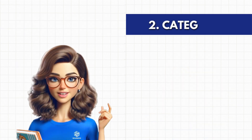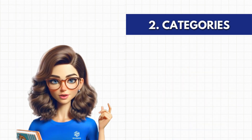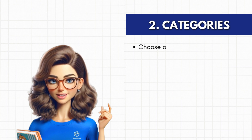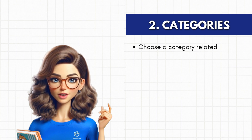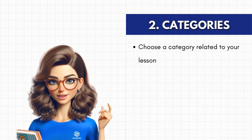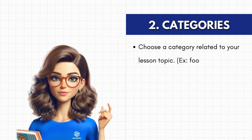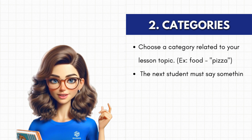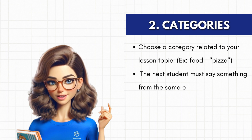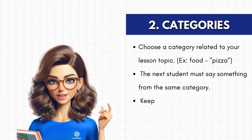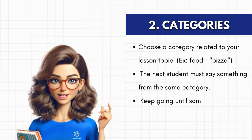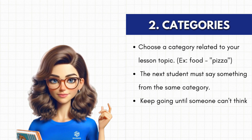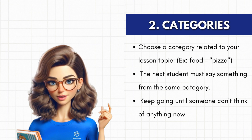Next on our list is Categories. Choose a category related to your lesson topic, whether it's food, animals, or countries. Let's start with food — the first student says pizza. The next student must say something from the same category that hasn't been mentioned yet, like hamburger. Keep going until someone can't think of anything new or hesitates. It's a whirlwind tour of words that will have your students thinking fast.